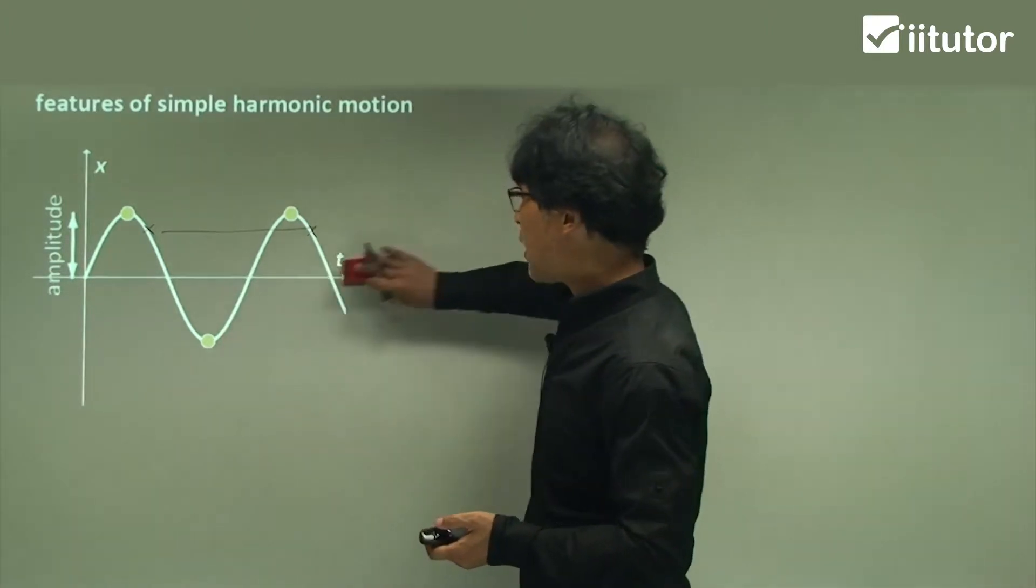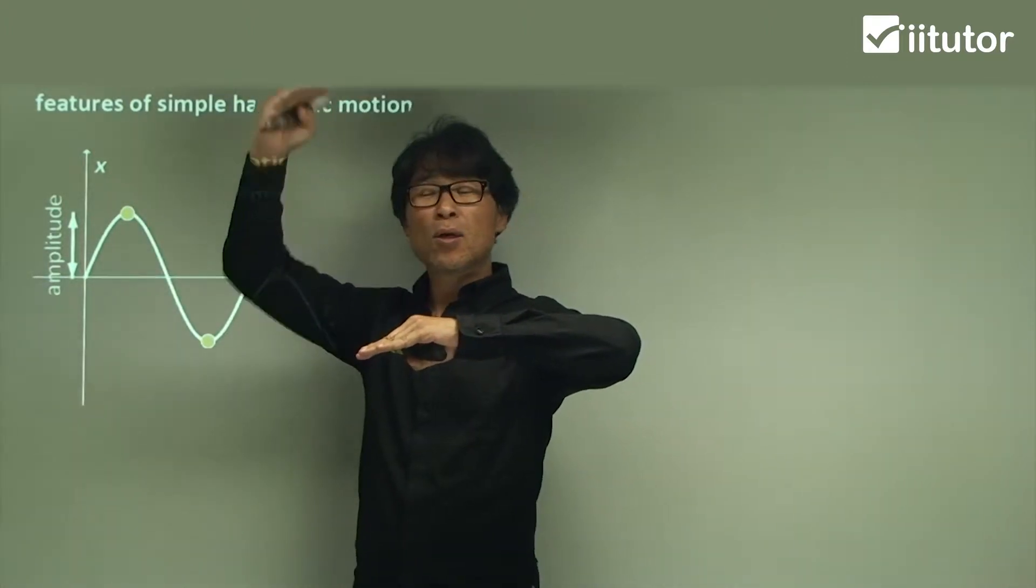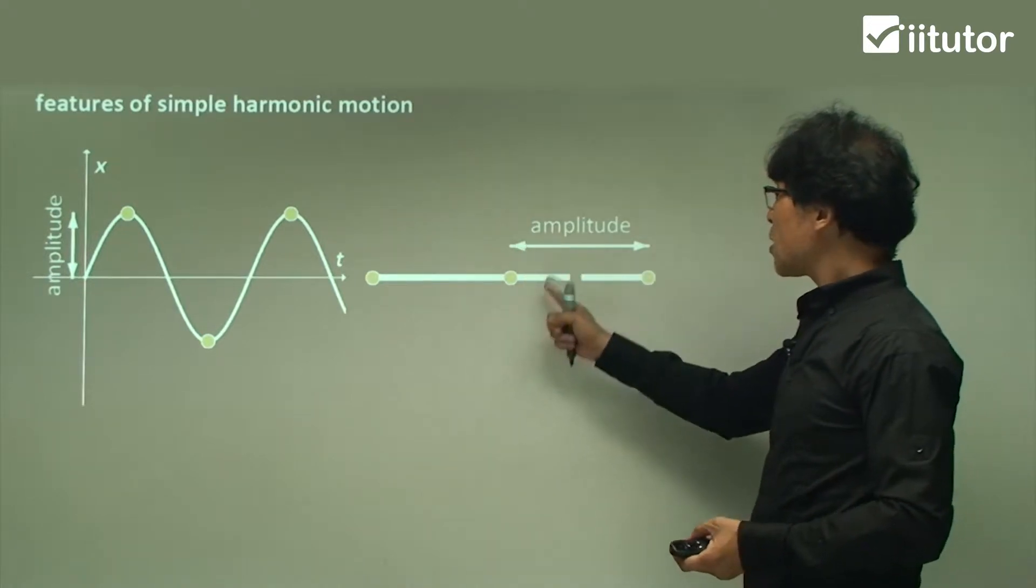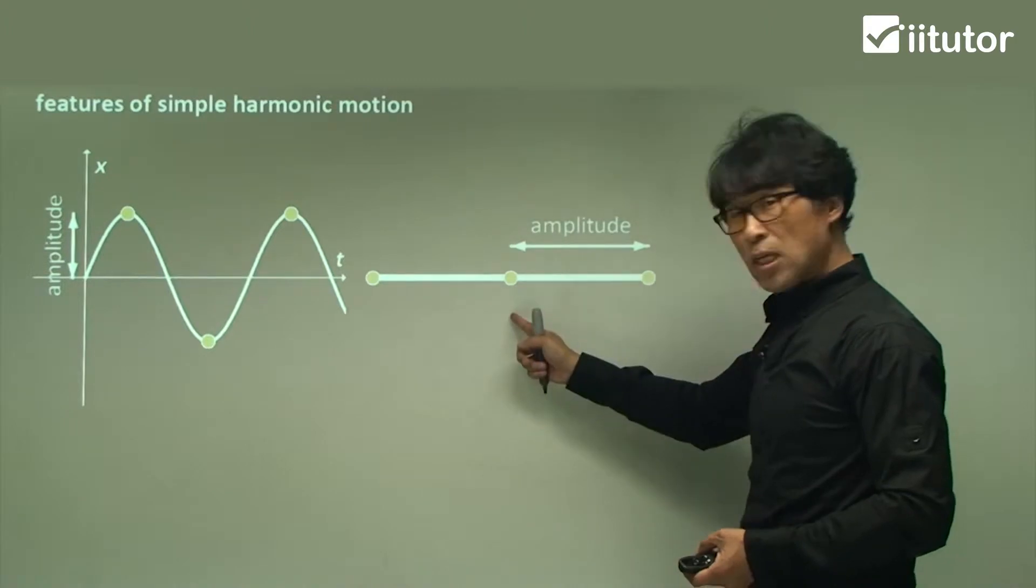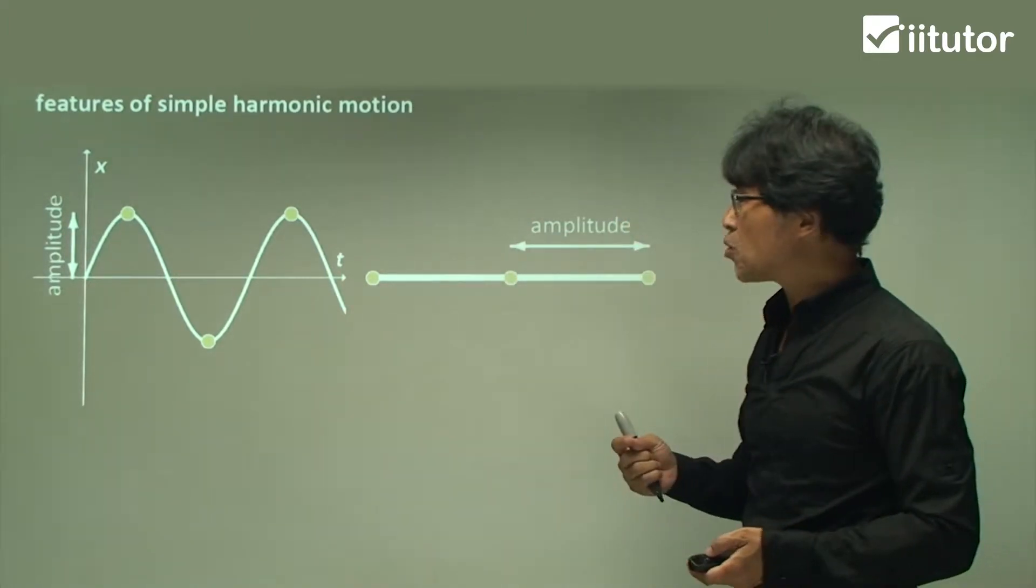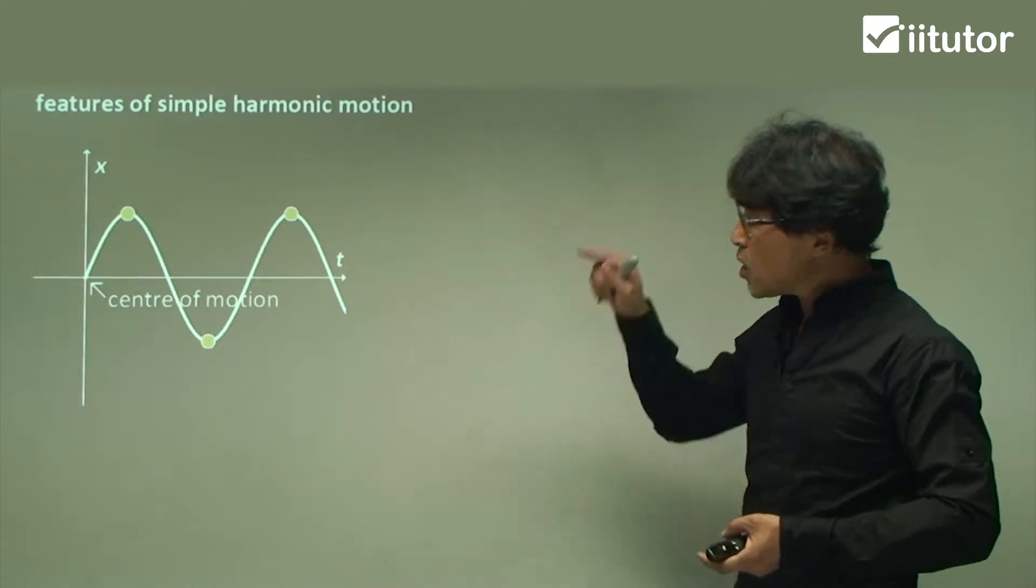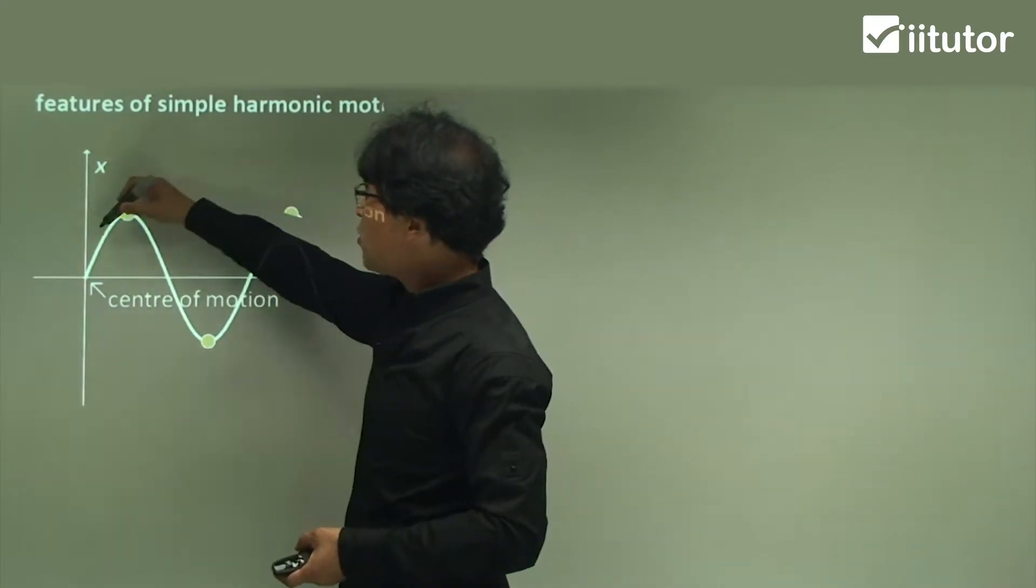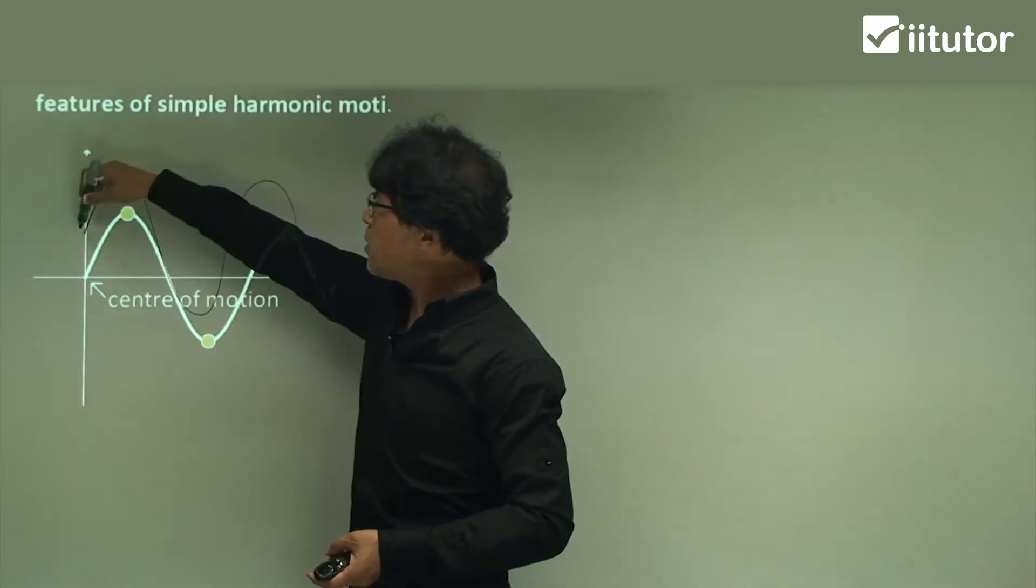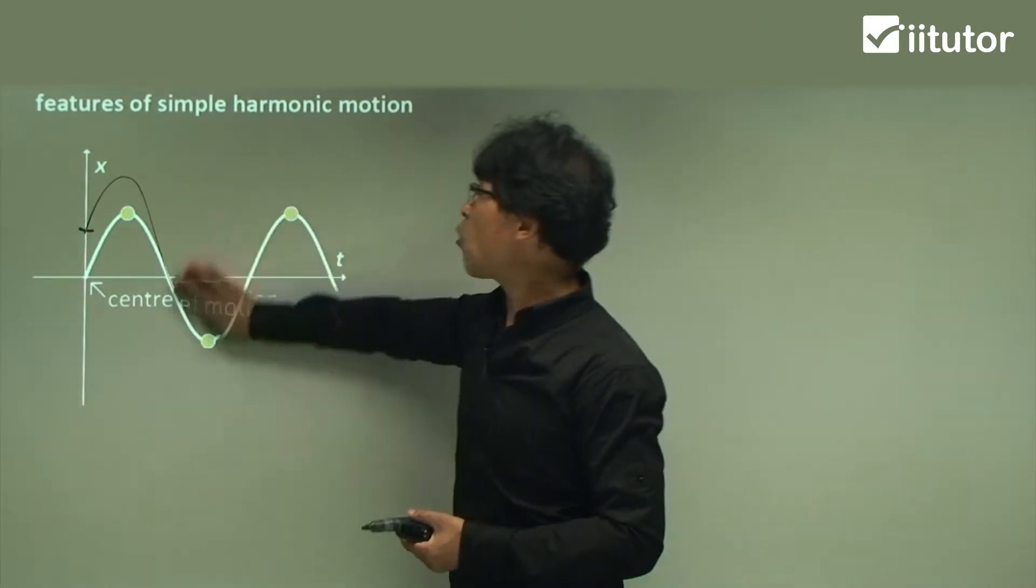The next one is the amplitude. Amplitude is from the center of the motion up to the maximum height or maximum displacement. The amplitude also refers to the distance between the center to the rightmost or center to the leftmost. The center of the motion is not always in the origin. It may be somewhere else. The center of the motion does not represent the origin.